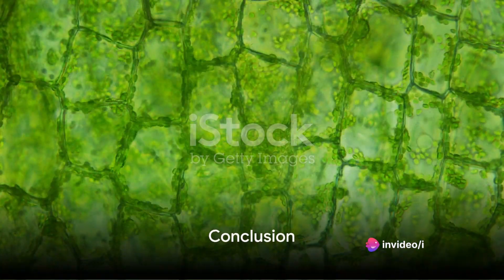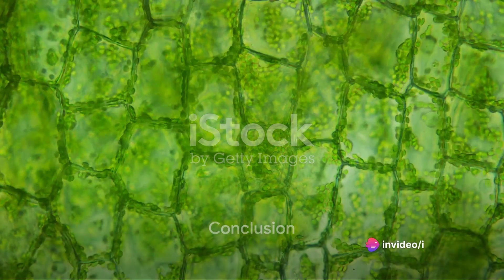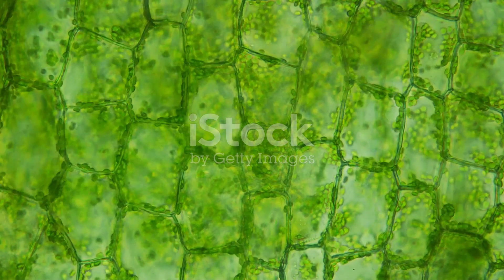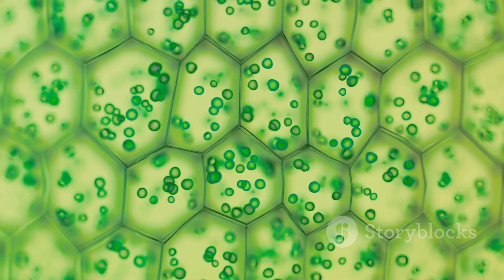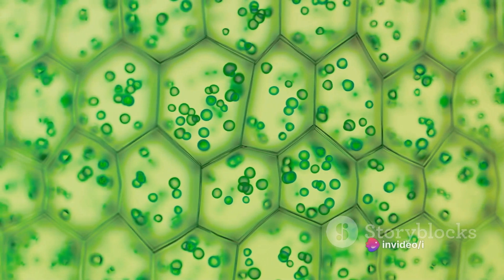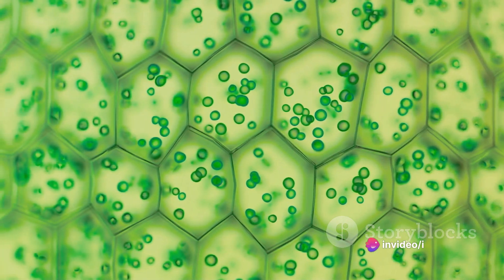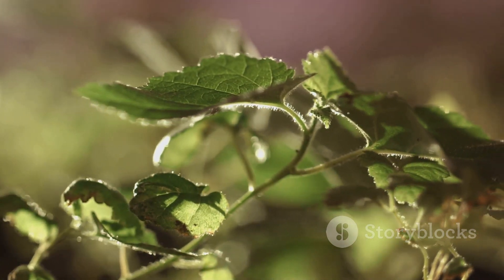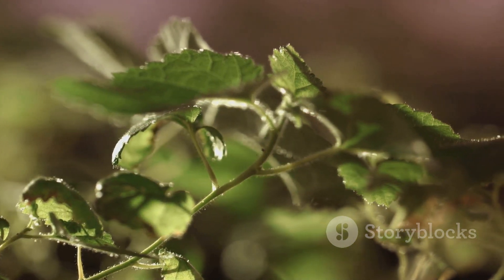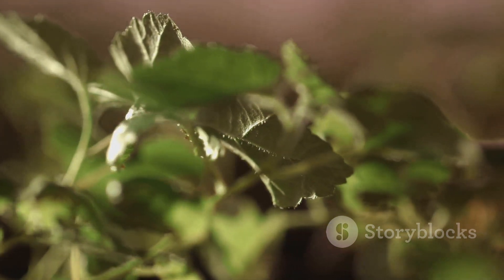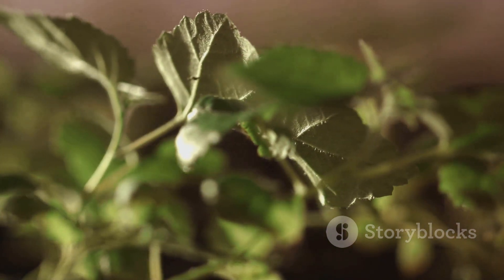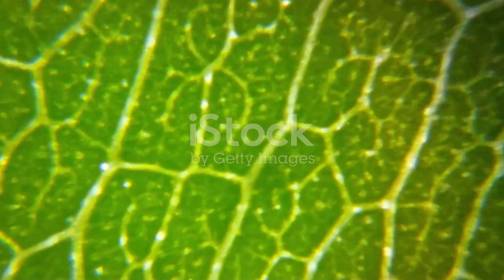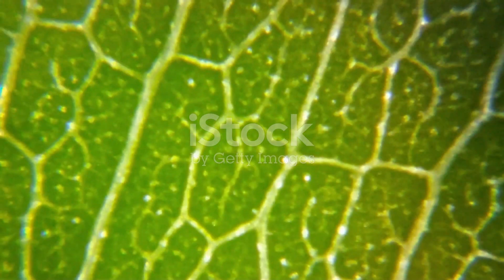In conclusion, plant tissues are an intricate network of cells, each with its unique function. From enabling growth through meristematic tissues to carrying out specific tasks through permanent tissues, these structures ensure the survival and prosperity of the plant. Whether it's the apical meristem aiding vertical growth, the parenchyma storing nutrients, or the xylem transporting water, each tissue type plays a vital role in the plant's life. Understanding these tissues helps us appreciate the complexity and beauty of the plant world.